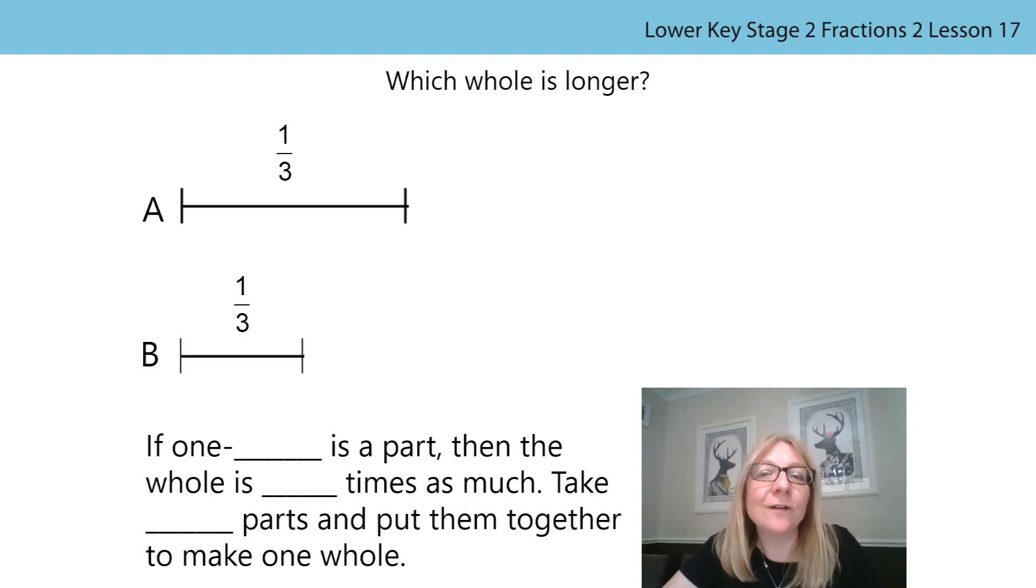How did you get on? Do you agree that the top line is the longest? The part we were given in both lines represented one-third and so the whole of each line is three times as long. Each part of line A was longer and so the whole line was also longer. Each part of line B was shorter and so the whole line was shorter.